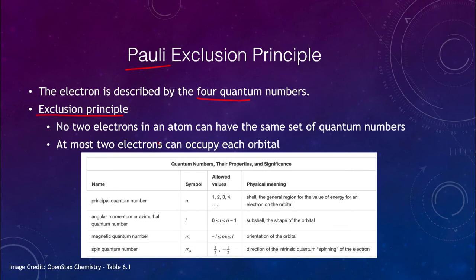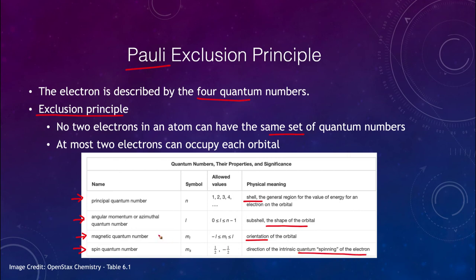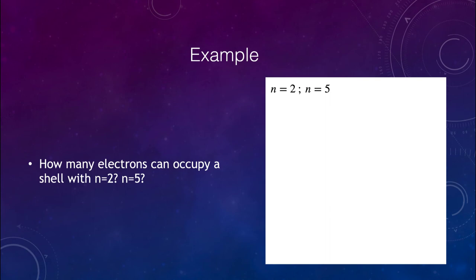No two electrons can have that exact same set of quantum numbers. The principal quantum number tells you what shell and energy level you're in; the angular momentum quantum number tells you the shape of the orbital; the magnetic quantum number tells us the orientation; and the spin quantum number tells us the intrinsic spin direction of the electron. No pair of electrons in an atom can have all four quantum numbers exactly the same.